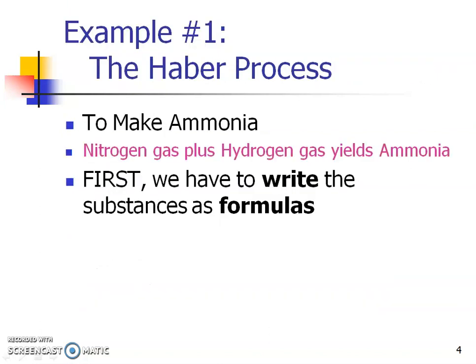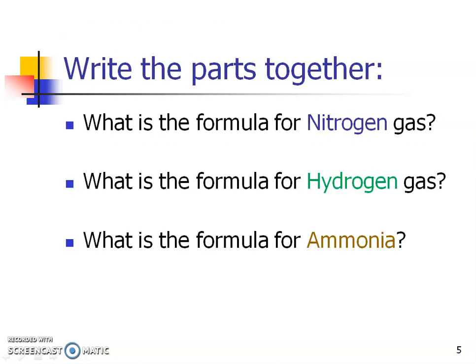Example number one is the Haber process — the reaction to make ammonia. It's written as nitrogen gas plus hydrogen gas yields ammonia. The first thing we need are the formulas for each substance in order to start balancing. Nitrogen and hydrogen remind me of Cliff H. Braun — those are diatomic molecules. So nitrogen is going to be N₂ and hydrogen is going to be H₂.